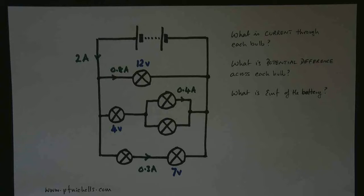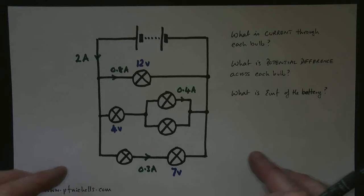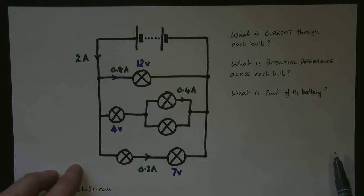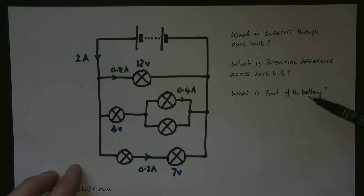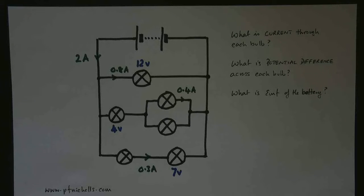In this video, we're looking at what we would call Kirchhoff's Laws. We're going to try and work out the voltage and the current for each bulb in the circuit. Here we have a circuit — someone gave a small child a large collection of bulbs and told them to build a circuit, because that's a fairly random circuit. We have three questions: what is the current through each bulb, the potential difference across each bulb, and the EMF of the battery? We have some values given to us already, and our task is to find out the rest.